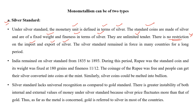जो silver standard था, वो बहुत देशों में बहुत लंबे समय तक चला। India ने भी silver standard को adopt कर लिया था — 1835 में और 1893 तक India के अंदर silver standard prevail किया। इस समय जो rupee था, वो standard coin था — जिसे हम full bodied coin कहते हैं, जिसकी intrinsic value और extrinsic value दोनों बराबर होती है।